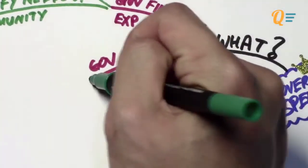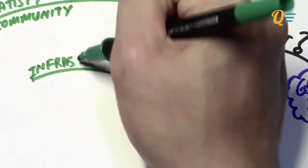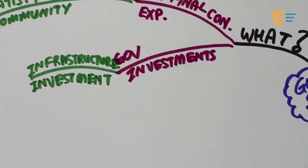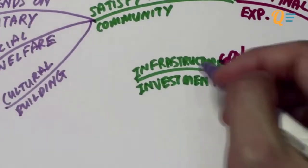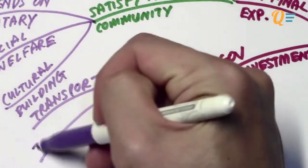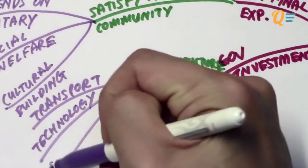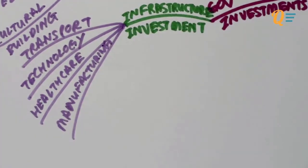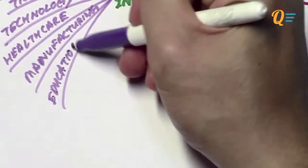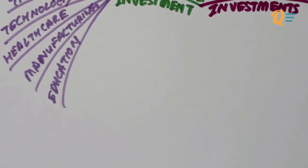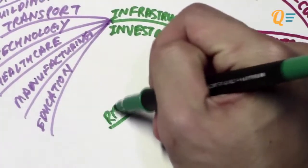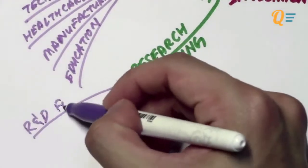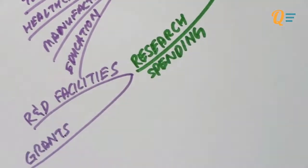Moving on to government investment activities, the first type is investment in infrastructure — spending on systems such as transport, technology, healthcare, manufacturing facilities, and education. All these systems are meant to spur productivity in the economy, so this is a form of investment because there are going to be future returns. Another type of investment would be research spending, where the government might build R&D facilities and give grants to promote productivity and innovation.